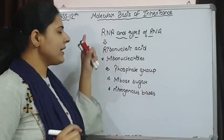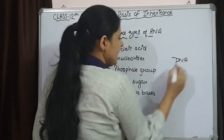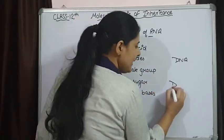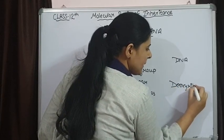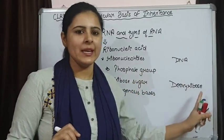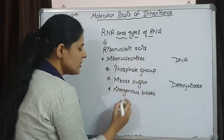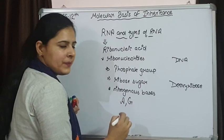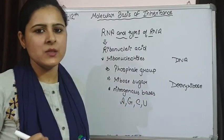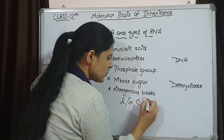Now if we compare with DNA, two differences are there. In DNA also, a phosphate group is present, but here ribose sugar is present, and in DNA deoxyribose sugar is there. This is one difference between DNA and RNA. The second difference is in their nitrogenous bases. Here the nitrogenous bases are adenine, guanine, cytosine, and instead of thymine, uracil is present.